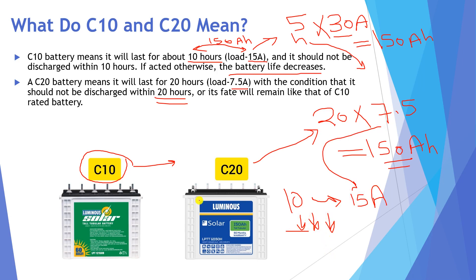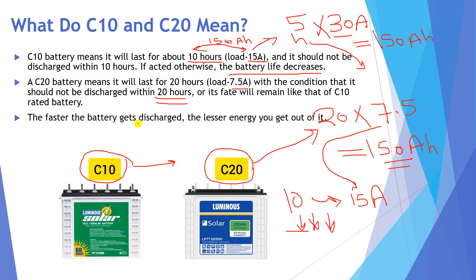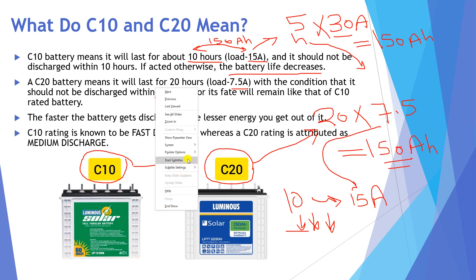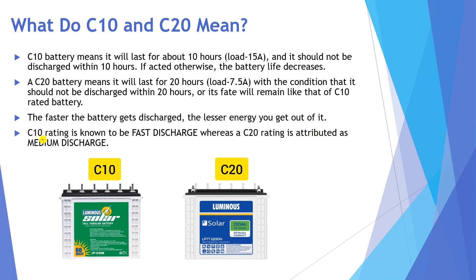According to the application, you choose C10, C20, C5, C100, and so on. Remember that the faster the battery discharges, the less energy you will get out of it. C10 takes only 10 hours so it is known as fast discharge. C20 is considered medium discharge — it takes 20 hours, which is a longer time than C10.